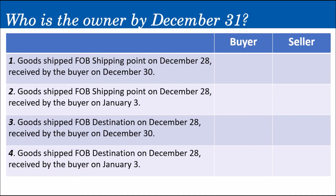Number one: goods shipped FOB Shipping Point on December 28, received by the buyer on December 30. Here, there's no problem. The seller shipped it December 28 and the buyer already received it December 30. Whatever the shipping terms, it's already with the buyer. So by December 31 in scenario number one, the merchandise belongs to the buyer.